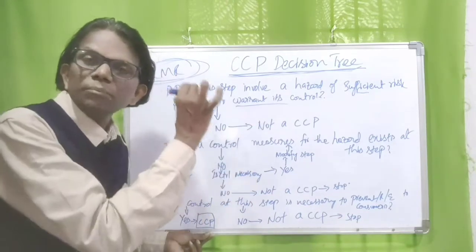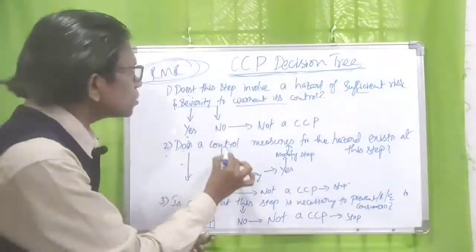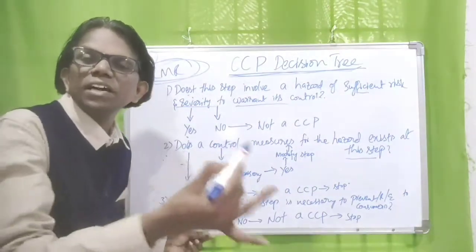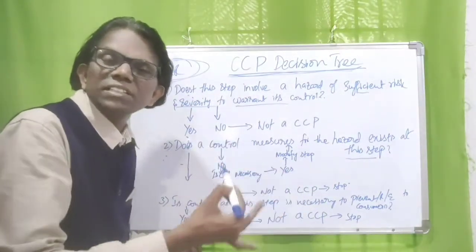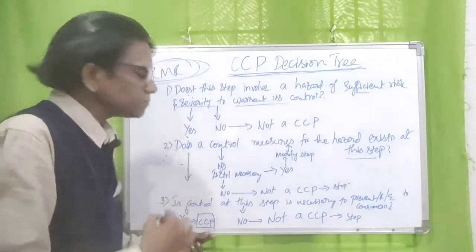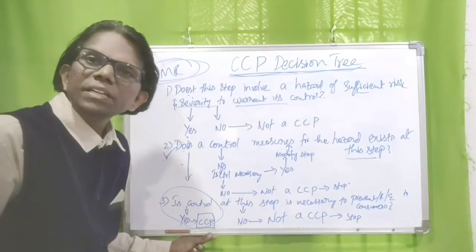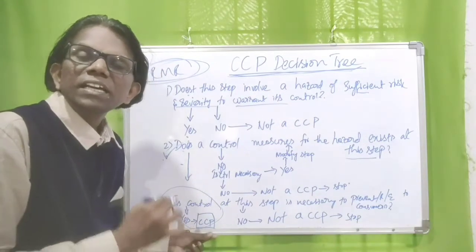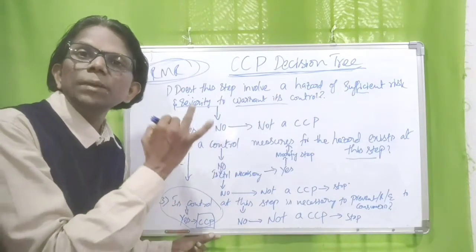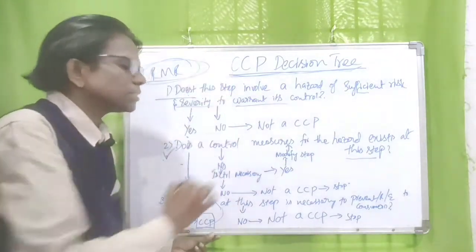The harvest vessel record states that the temperature has been maintained below 4 degrees centigrade in chilled condition until delivery to the supplier. So the control measures for the hazard exist at this step — we verify the harvest records, take declarations, and ensure proper temperature controls are maintained during transit. Therefore, at the raw material receiving stage, histamine is a CCP. If you maintain the cold chain, histamine formation will be prevented. That is a good example.